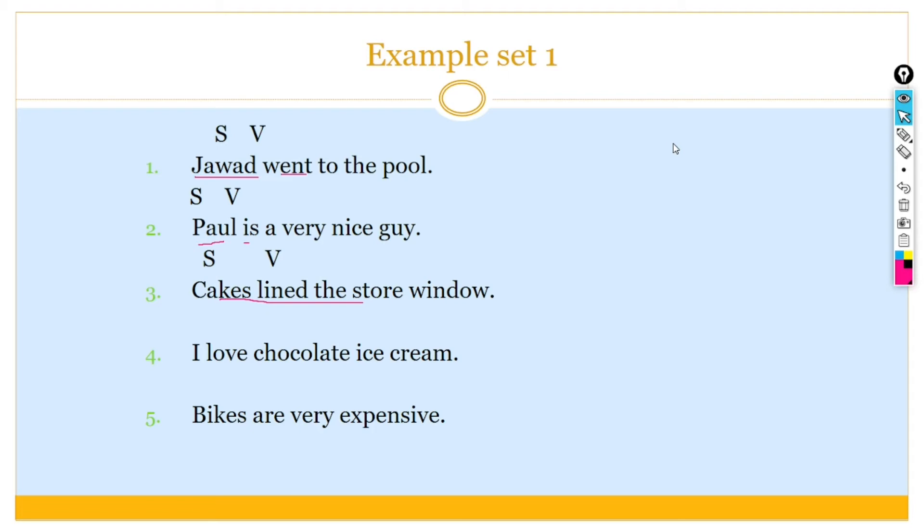Similarly, I love chocolate ice cream. I is a subject and love is the verb. Bikes are very expensive. In this sentence, bikes is a subject and are is the verb. Dad is strict. Dad is subject and is the verb.